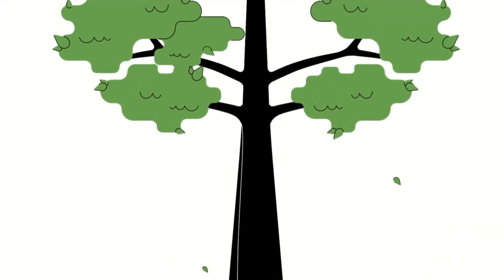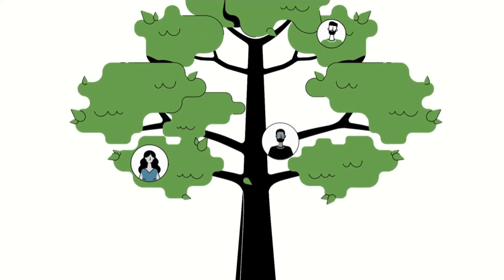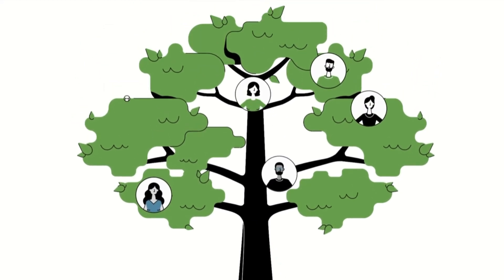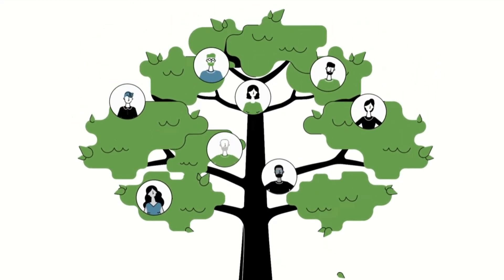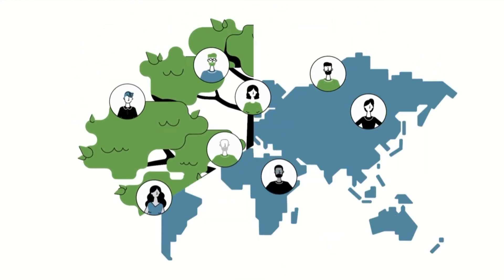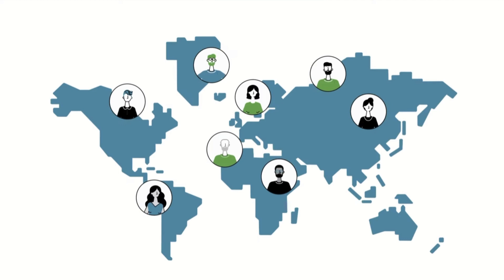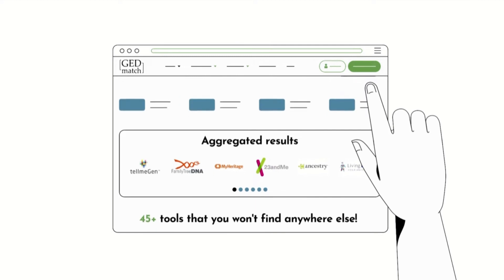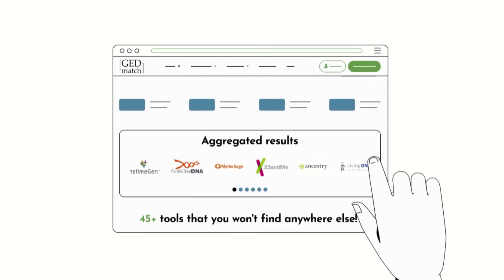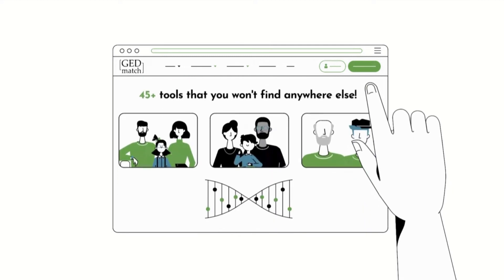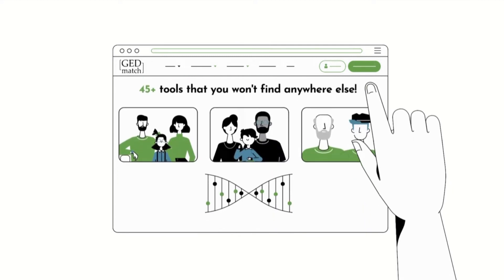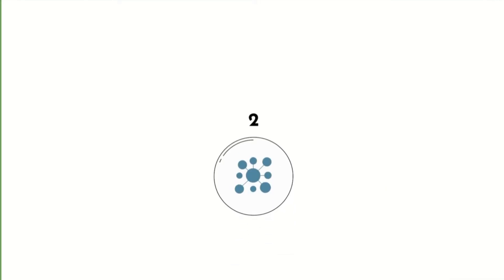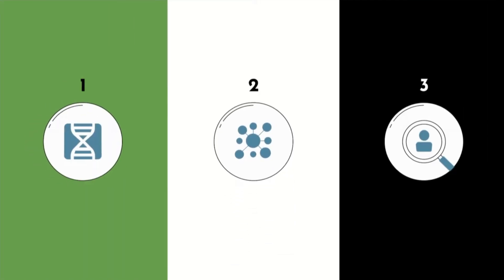GEDmatch has numerous calculators, and if you do not have some knowledge about your own people's history and genetics and how the calculators come to their results, you will misinterpret some of the results. Some of the calculators include spreadsheets which show the results of certain ethnicities and nationalities to help you understand what each genetic ancestry component means.